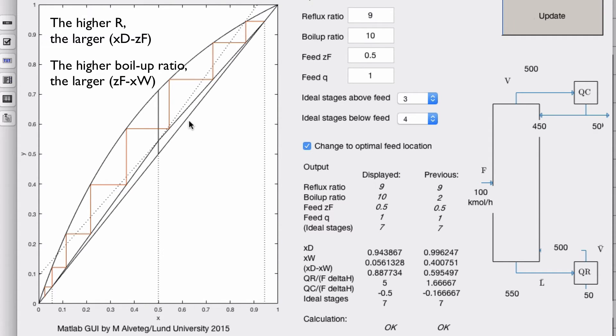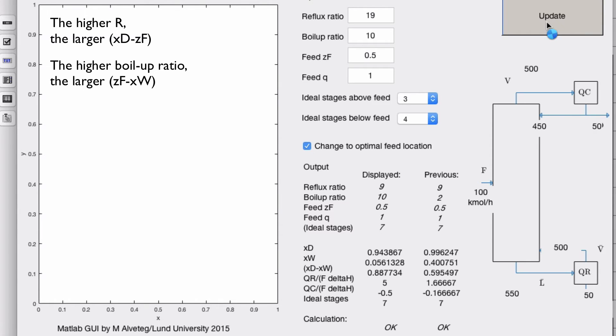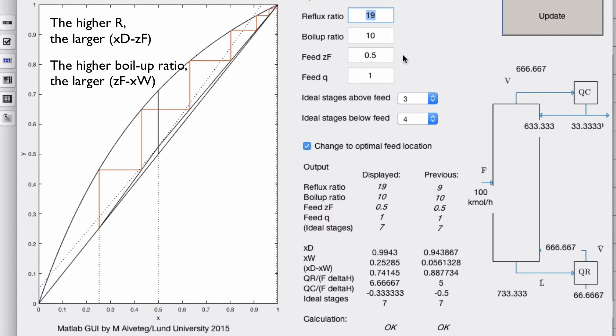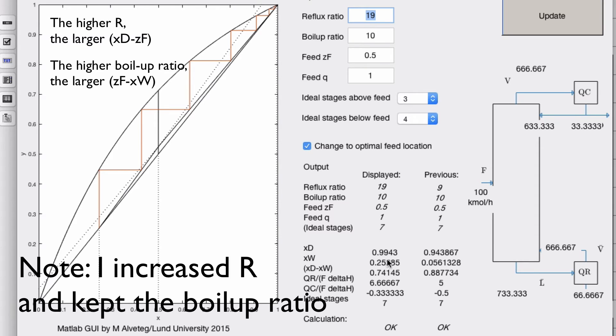So total reflux, then, I mean, we can increase this a bit. Let's see how much the program copes with. Yeah, what happens now is that you get an xd that's really, really close to 100% in this case, since we now have these other things set. And that might not be that interesting. But so the higher reflux ratio you have, the higher xd you will have in a running setup.